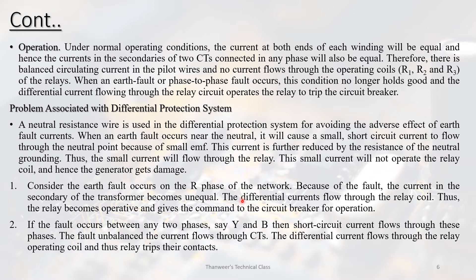In the case of a neutral resistance wire, the current is limited by the resistance, and the relay coil receives sufficient current to operate. However, excessive current limitation may reduce sensitivity and create a risk of damage, which remains a problem with this arrangement.